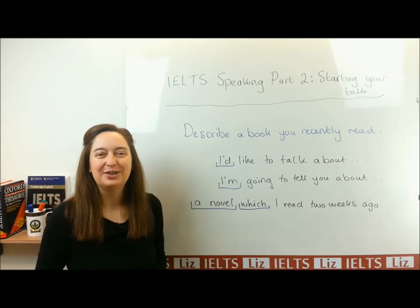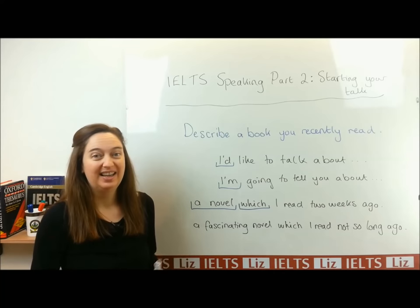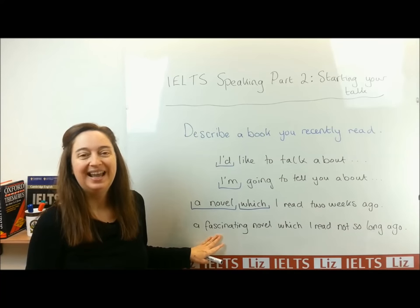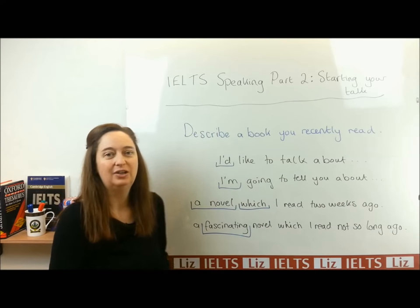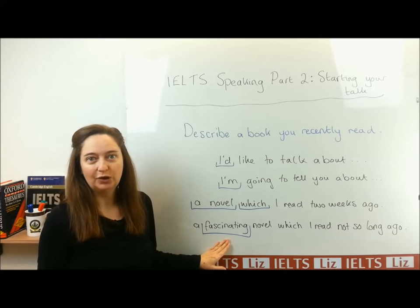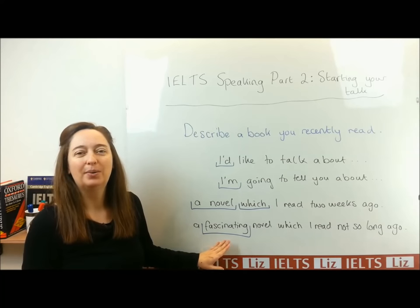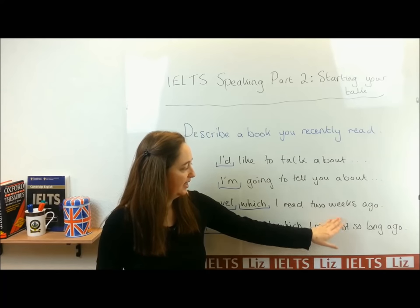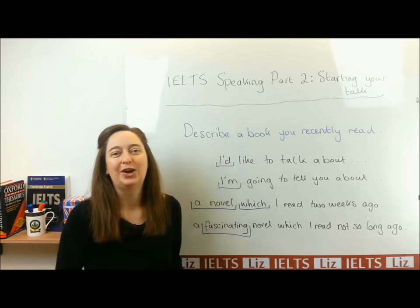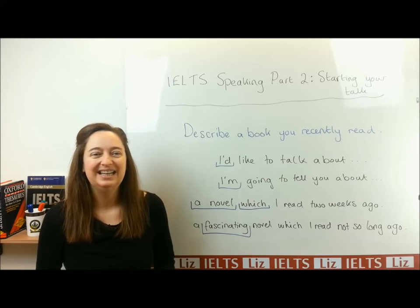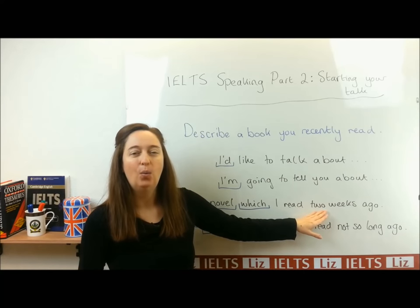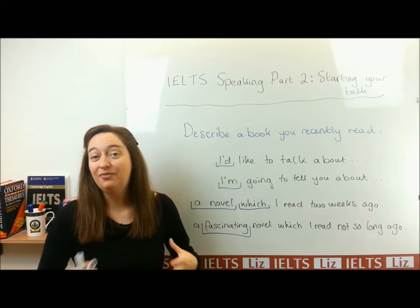But we can improve it — let's look at one more. Here's how we can improve that start. One thing you can do is give more information, more description, using an adjective. Here I've used the adjective 'fascinating,' which means really interesting. You could also use 'useful' or 'exciting' to describe the book more. And instead of giving a specific time, I've used the paraphrase 'not so long ago,' which is a direct paraphrase for 'recently' — very nice to use. It also means that during your talk you can give more information about exactly when you read the book, and that's a way to develop and extend your talk.